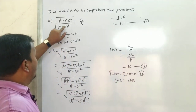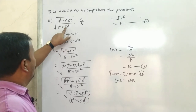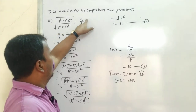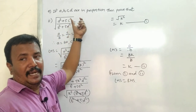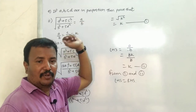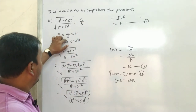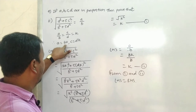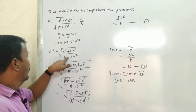Second part: prove that √[(a² + 5c²) / (b² + 5d²)] = a/b. We use the same approach: a/b = c/d = k, meaning a = bk and c = dk.